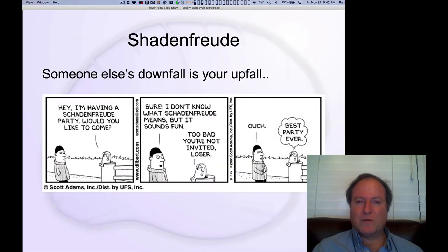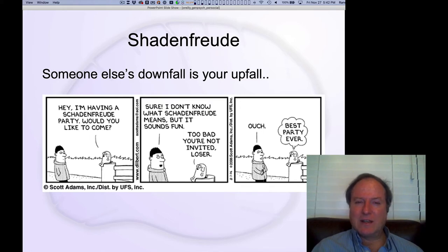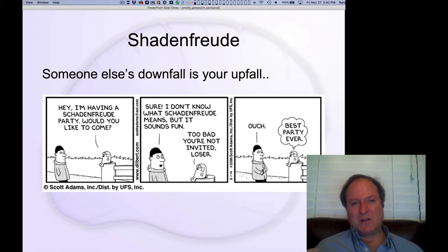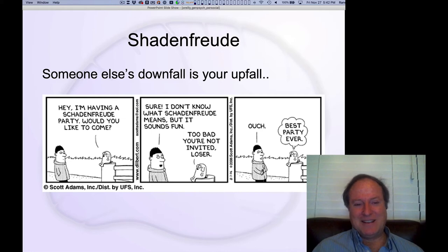There's an official German word for this downward social comparison: schadenfreude, which is basically looking at someone else's negative outcome — something bad happening to somebody else — and that makes you feel good about yourself. It really is just this downward social comparison. Of course, the ubiquitous Dilbert cartoon here illustrates it — having a schadenfreude party.